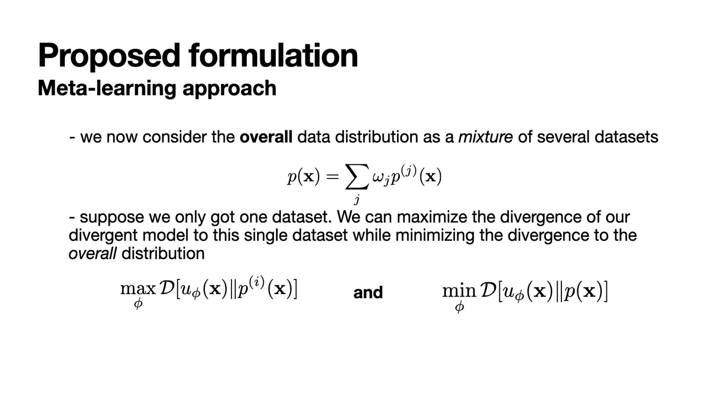To see how maximum divergence could benefit from meta-learning, let us consider our overall data distribution as a mixture of several datasets. Suppose that we only got one dataset, we can maximize the divergence of our divergent distribution to this single dataset, while minimizing the divergence to the overall distribution. Both objectives can be optimized by maximizing this ratio, that we call the maximum divergence meta-objective.